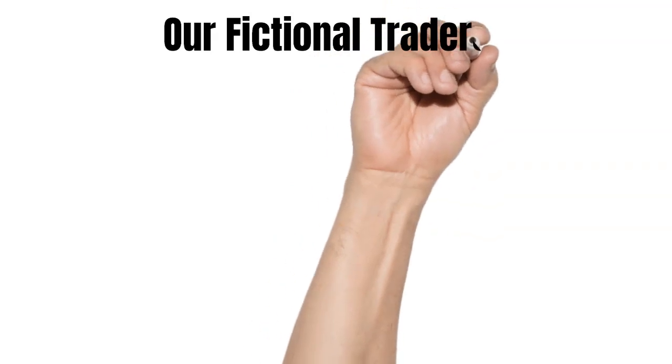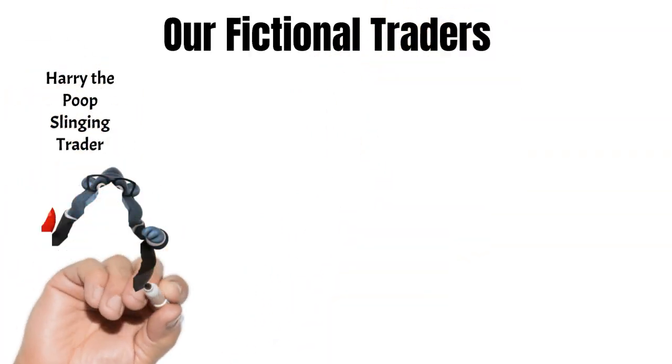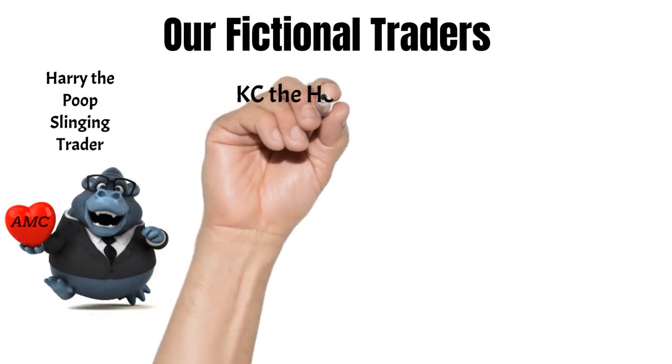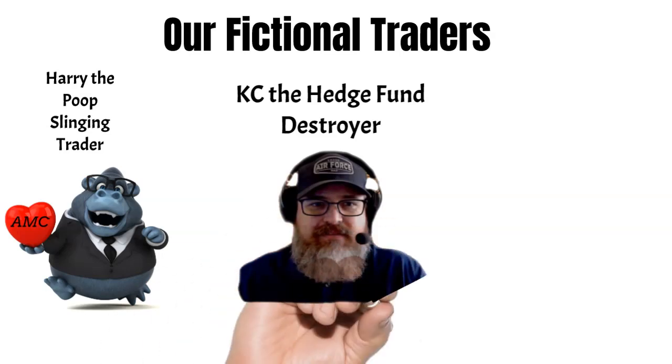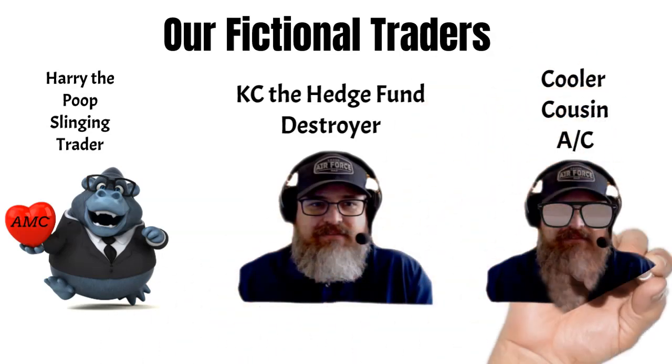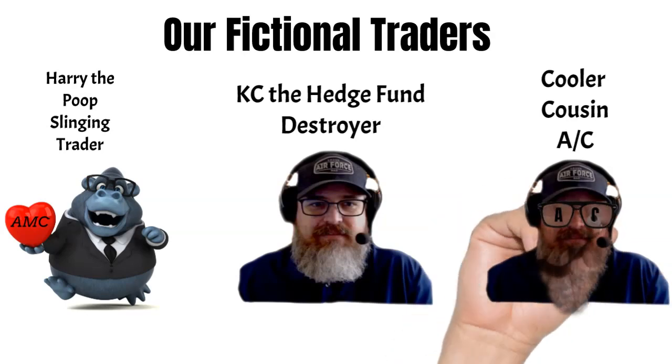For this tutorial, I need to introduce you to three fictional characters. First, we have Harry, the Poop Slinging Trader. Next, there is Casey the Hedge Fund Destroyer. And finally, please welcome Casey's cooler cousin, AC. Oh, and I almost forgot the most important character of all, Papa Mac. He will be our narrator for the remainder of this lesson.